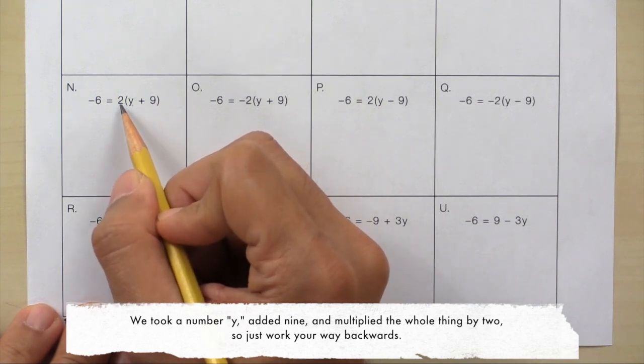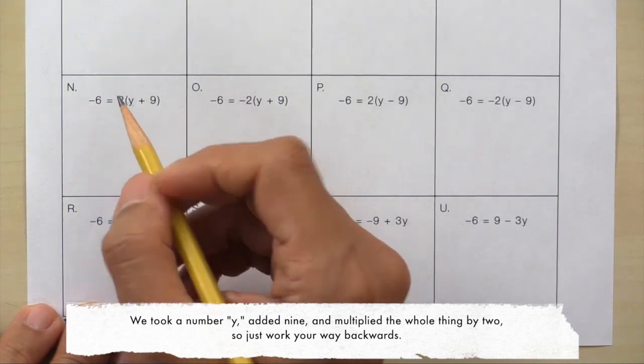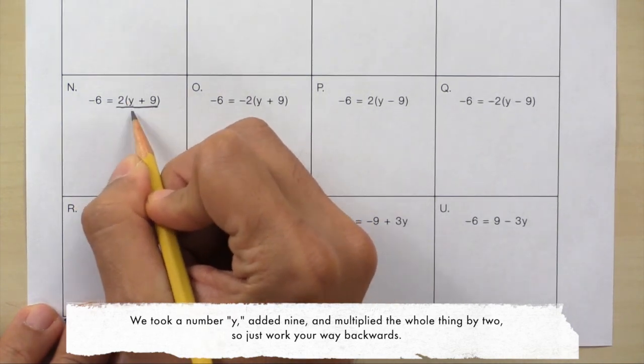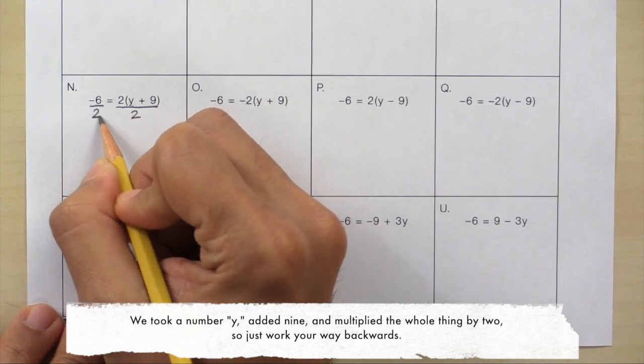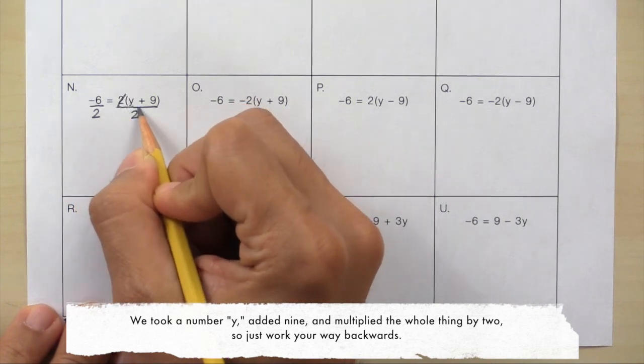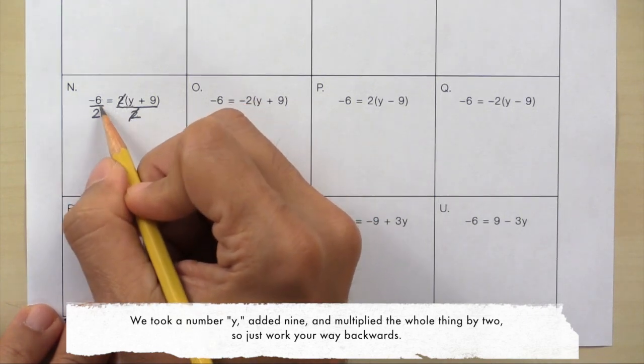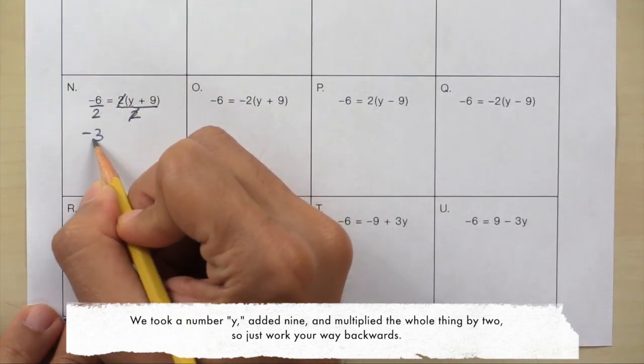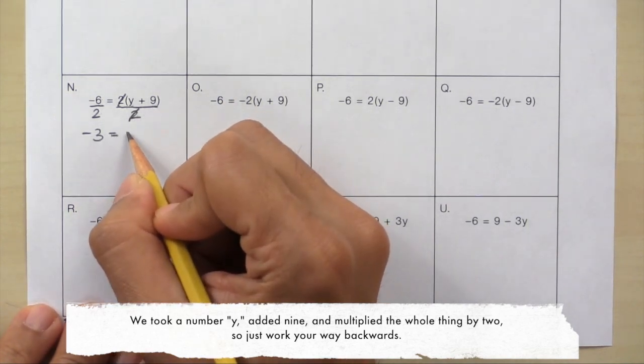So work your way backwards. Instead of multiplying by 2, divide by 2. Divide the other side of the equation by 2 as well. 2 divided by 2 equals 1. So here we have negative 3 equals y plus 9.